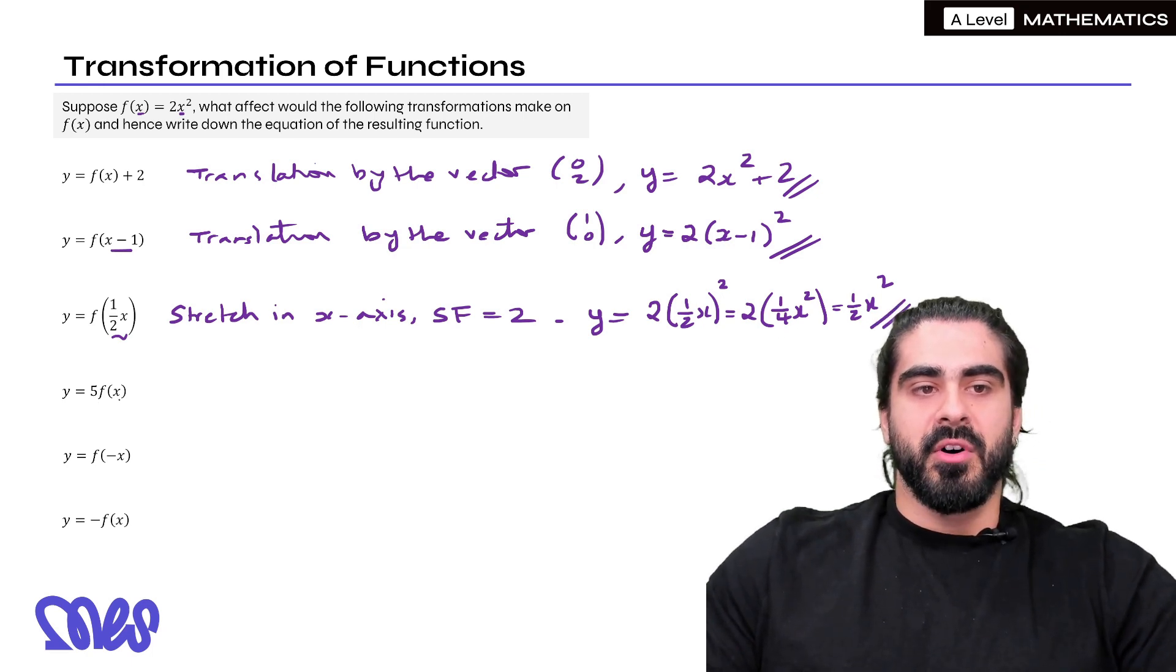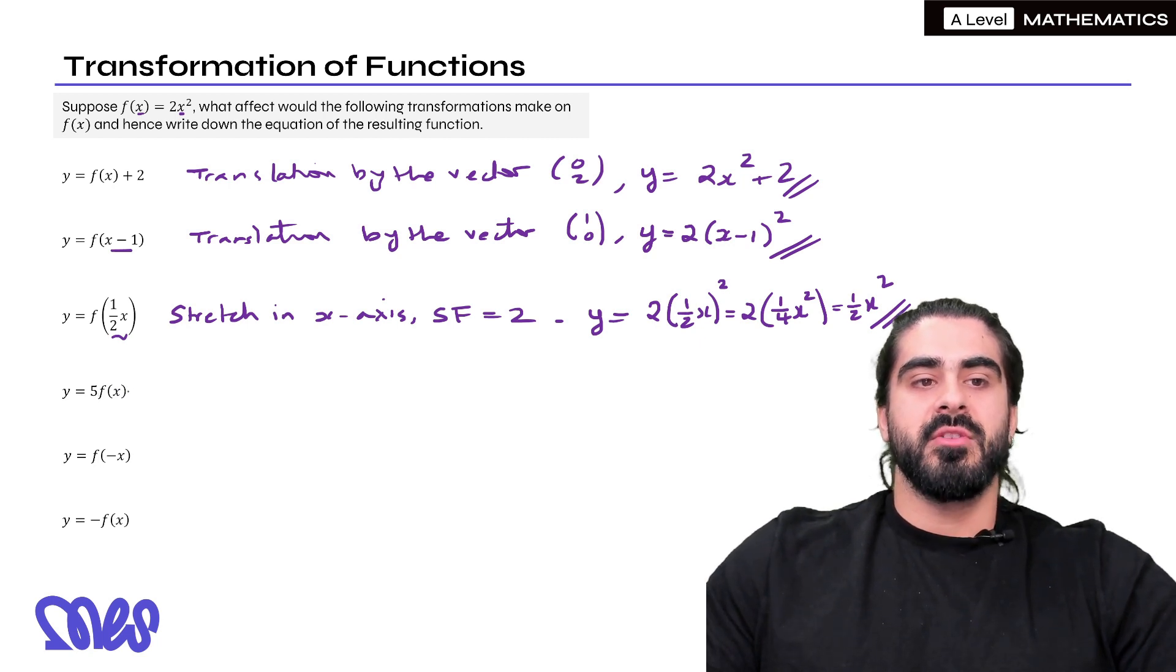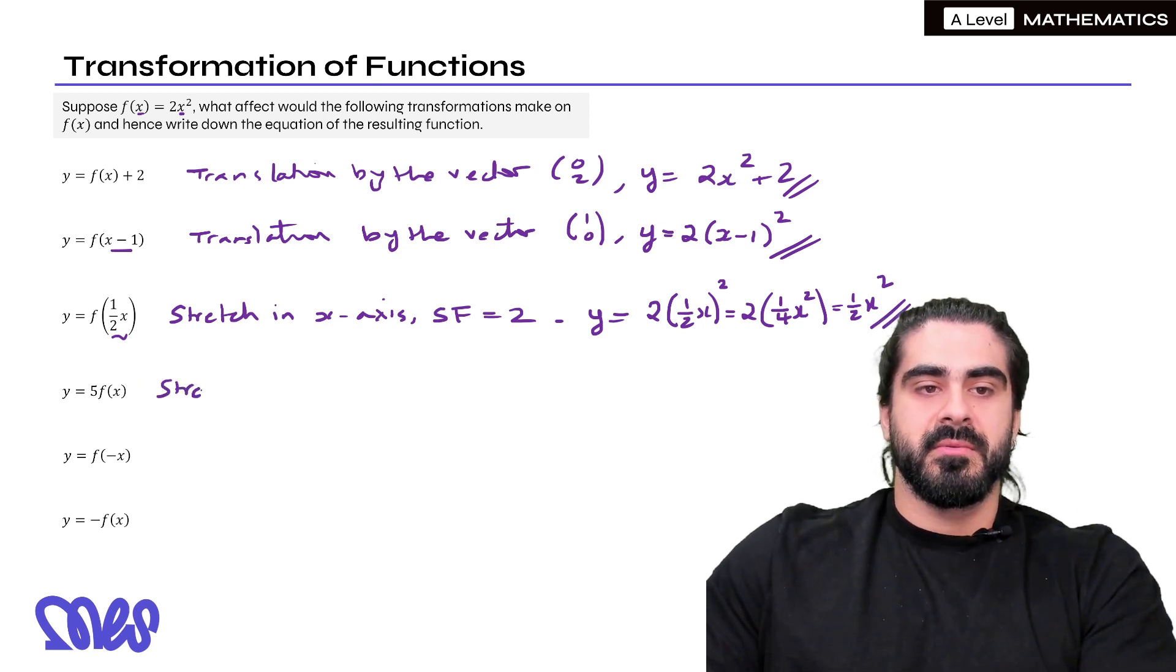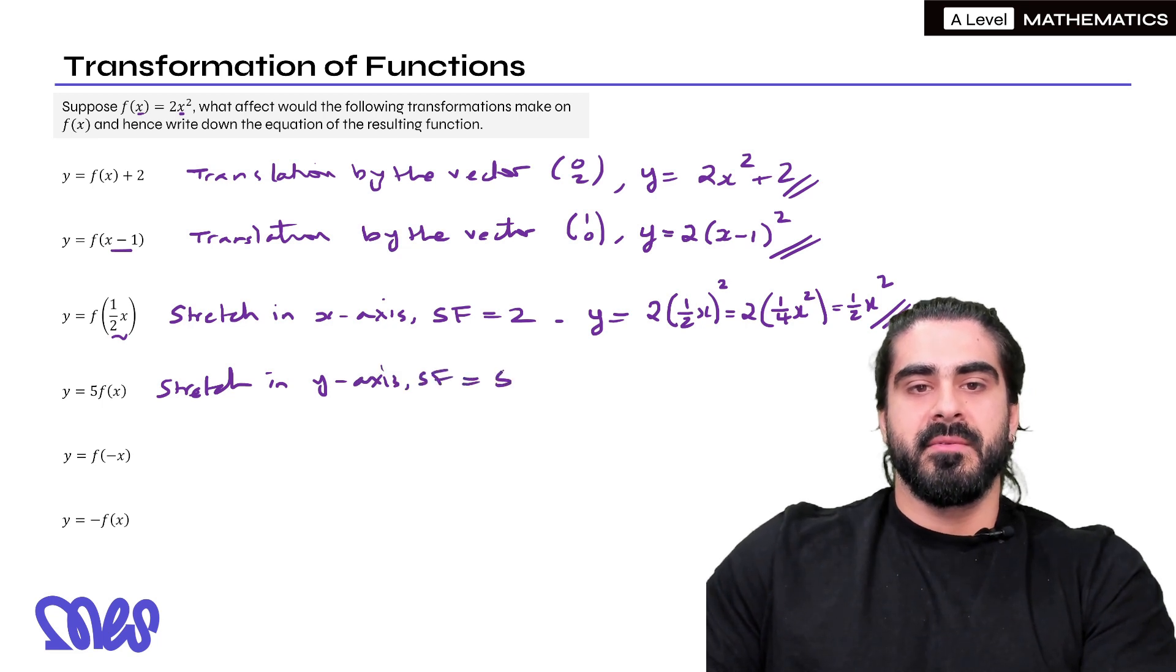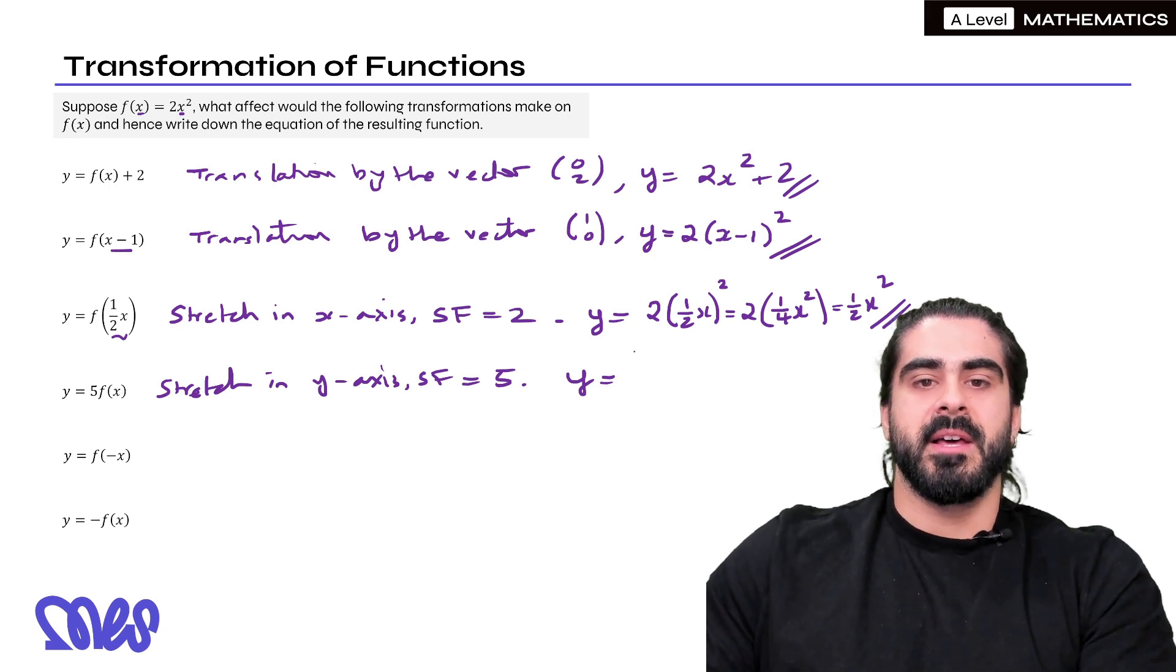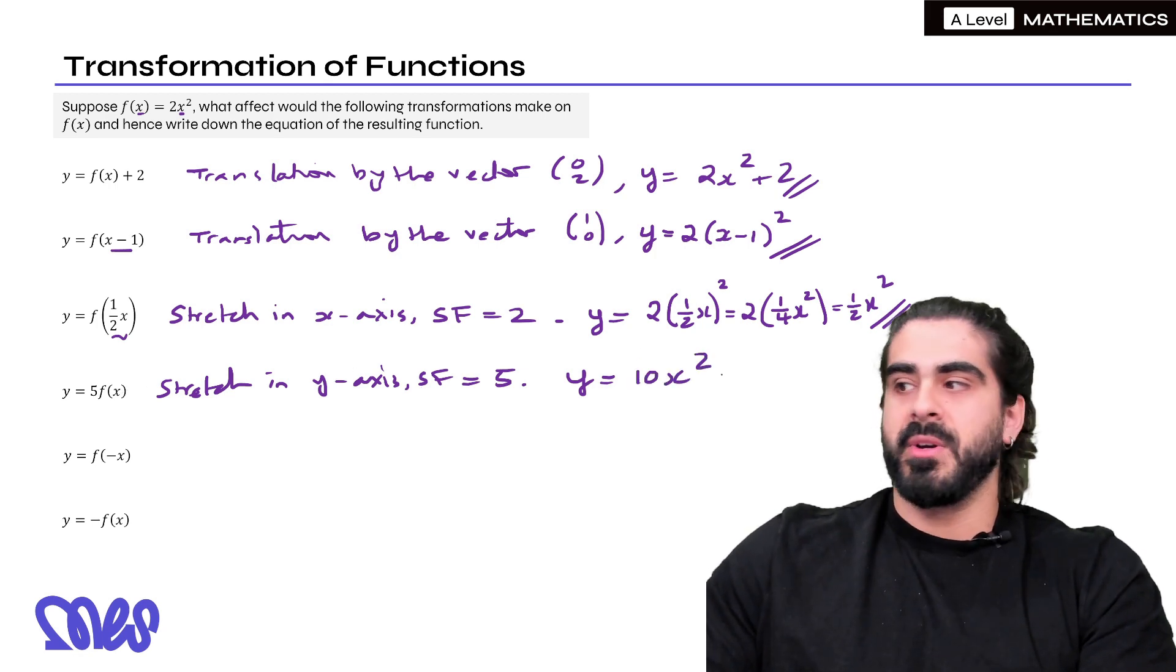Okay y = 5f(x). So this is outside of the function, so it's affecting the y values. It's just going to times them by 5. So it's a stretch in the y-axis and the scale factor here is 5. Now what is the equation there then? Well f(x) is just 2x², we're timesing that by 5. That'll be 10x².